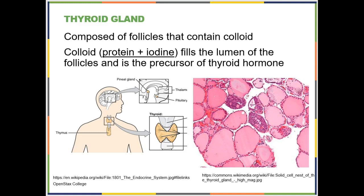Under the microscope, the thyroid gland shows many small circular structures called follicles. The follicles contain a substance called colloid. What you want to know is that this colloid is a combination of protein and iodine, and this is what your thyroid gland processes to produce thyroid hormones. This colloid is your raw material for making thyroid hormone.